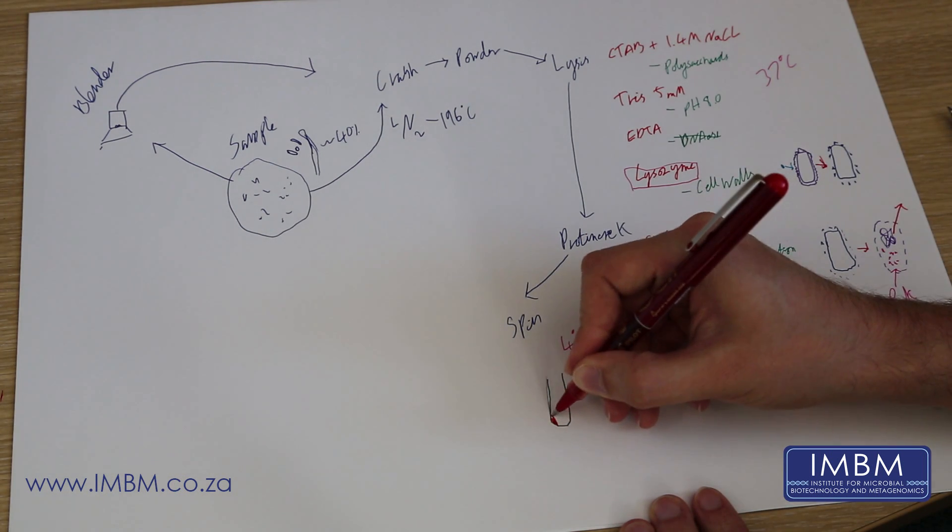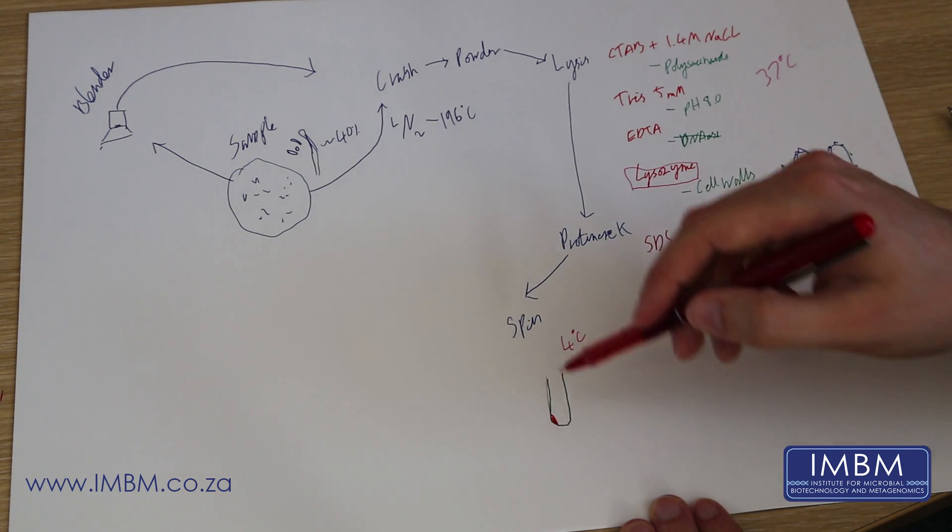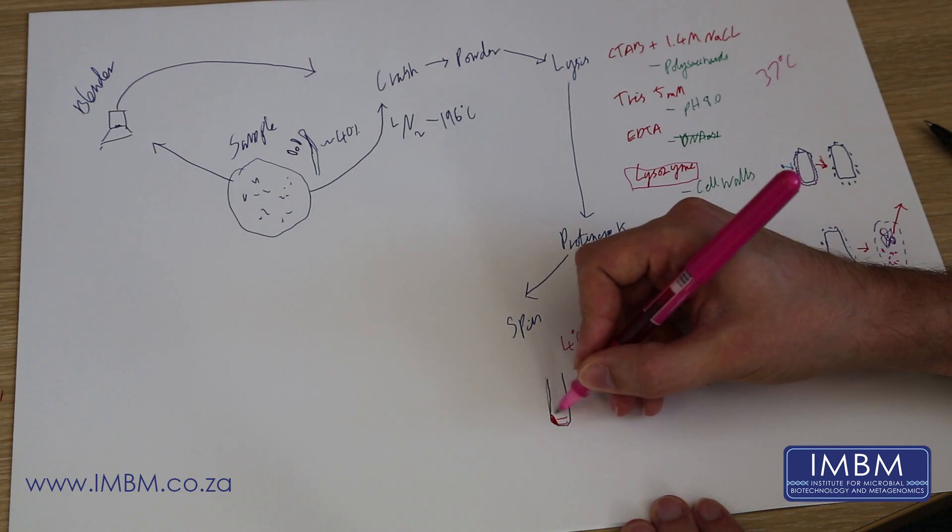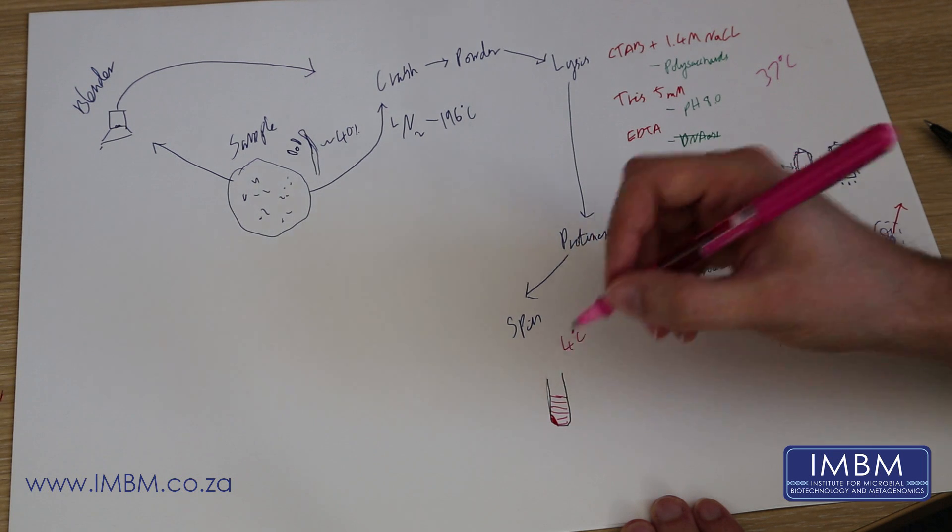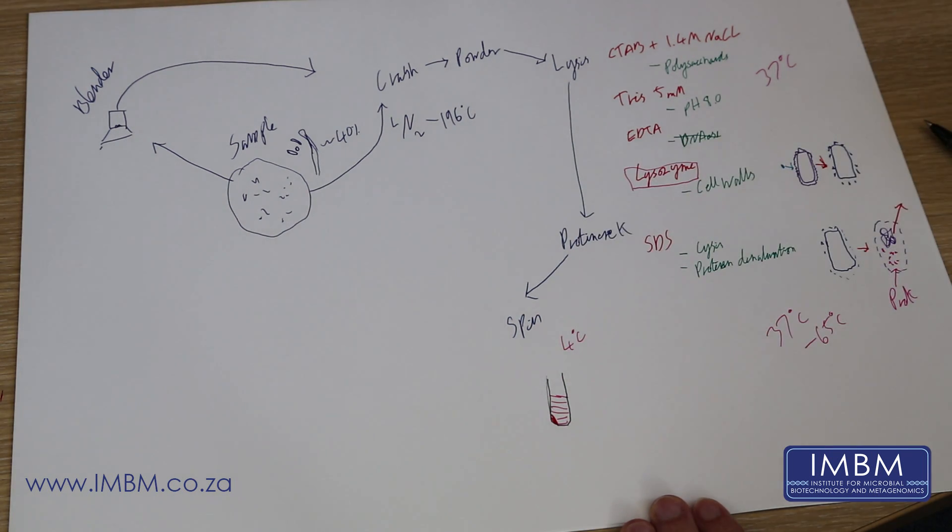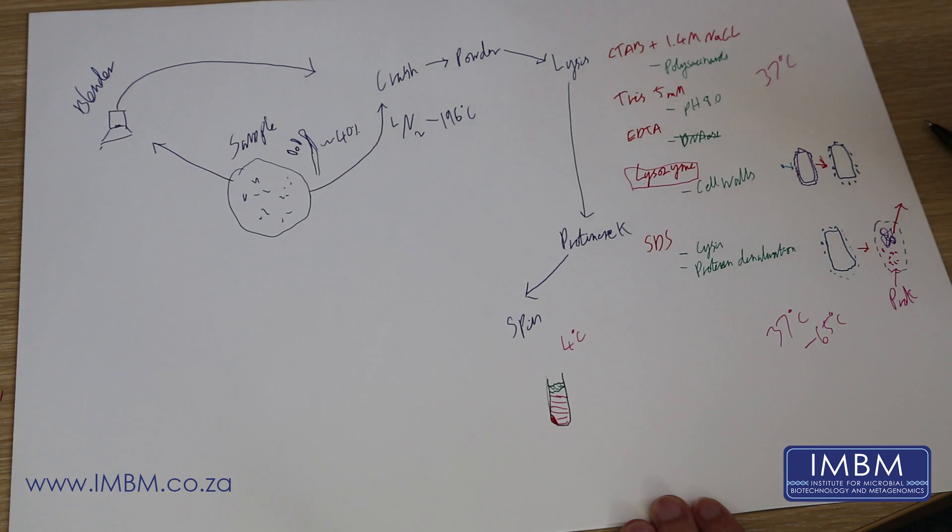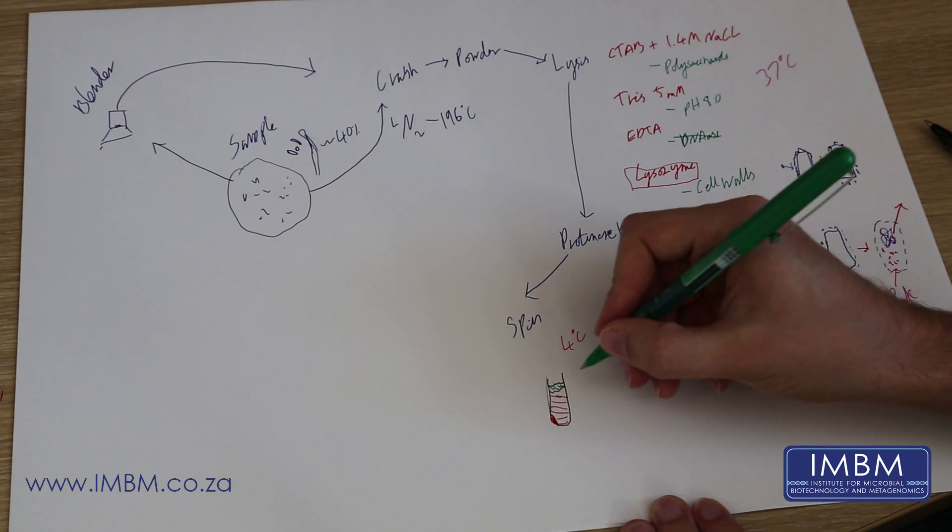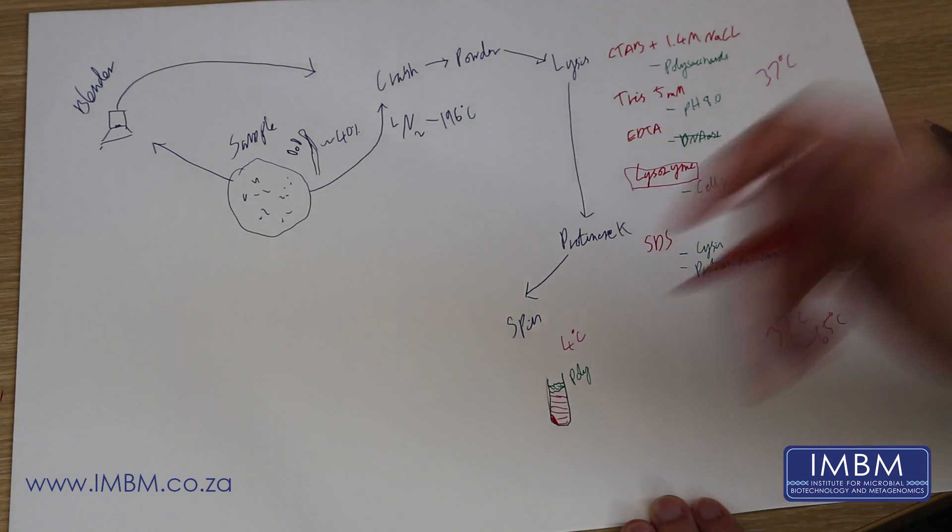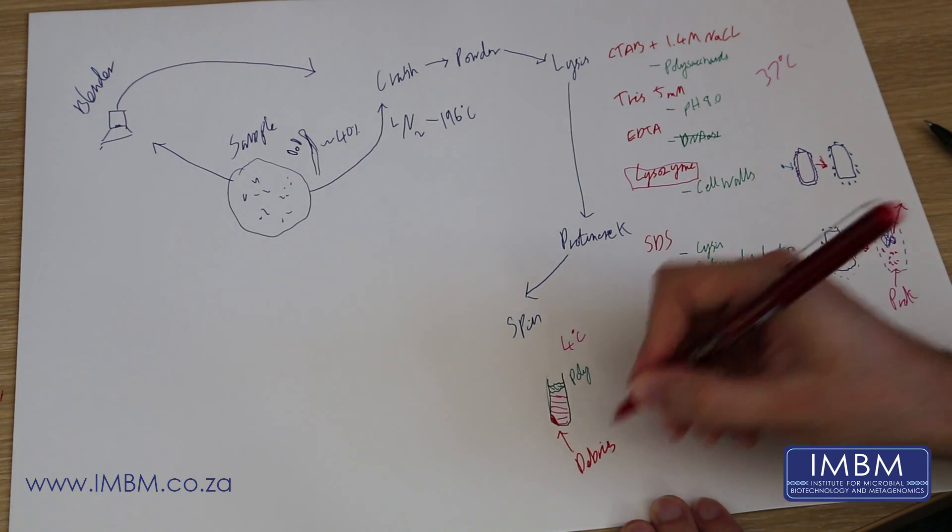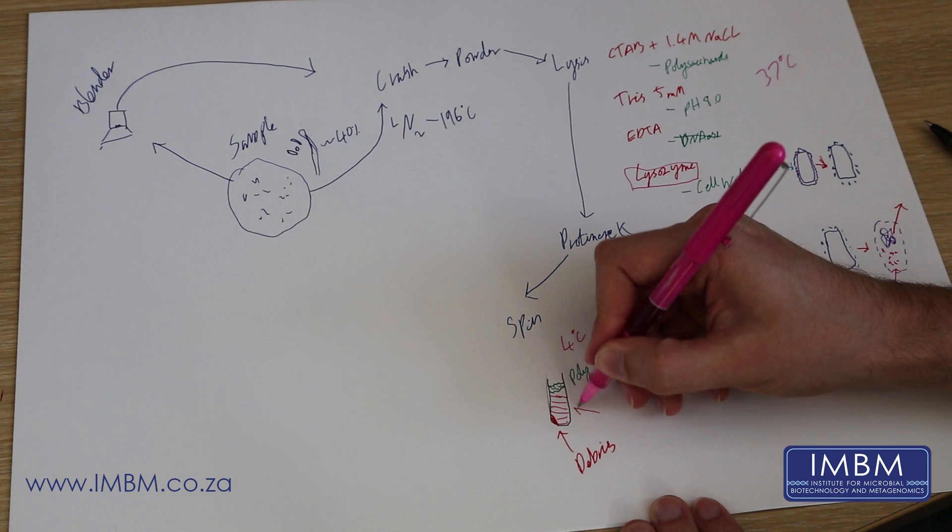What you'll first see is your cell debris. This stuff at the bottom is basically the sponge or the bacterial material that has run out. Next, you'll see a layer of aqueous material, usually the color of the sponge sample. And on top of that, you will see a layer. This is your polysaccharides. You want to remove only the pink layer. This is your polysaccharides, this is your cell debris, and this here is your DNA.